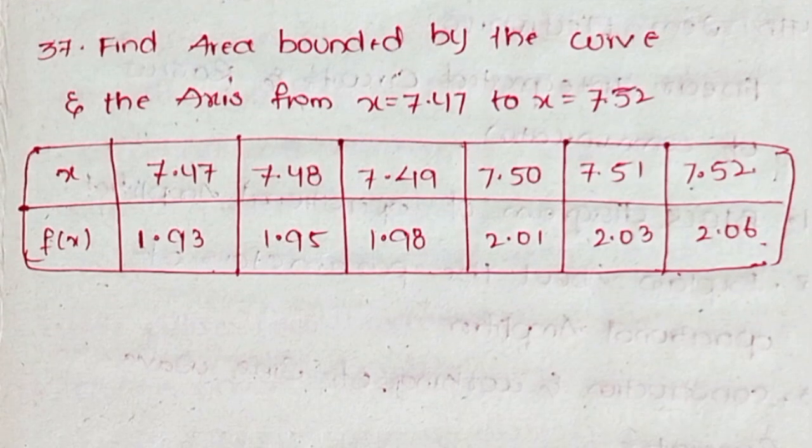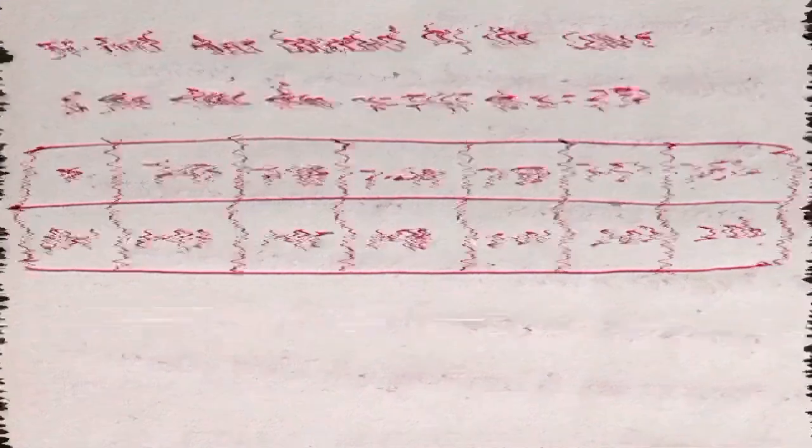Question 37: Find area bounded by the curve and axis from x = 7.47 to x = 7.52. x values: 7.47, 7.48, 7.49, 7.50, 7.51, 7.52. f(x) values: 1.93, 1.95, 1.98, 2.01, 2.03, 2.06. This is the 6th semester numerical analysis important questions.